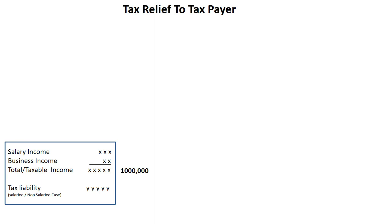During the year, you have some transactions. On the basis of those transactions, you can get relief. You can bring your total taxable income of 10,00,000 down, and the tax liability calculation would be done on 9,00,000. Even though you earned 10,00,000 during the period, because of certain transactions you carried out during the period, your total taxable income would be considered as 9,00,000.